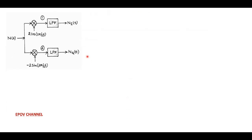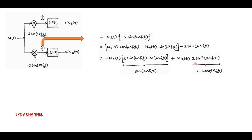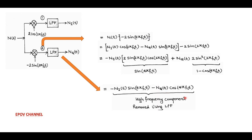Similarly, for the lower quadrature path, the input of the second low pass filter is n(t)·(−2sin(2πfct)). After substituting n(t) in terms of in-phase and quadrature components and rearranging, we get: −ni·sin(4πfct) − nq·cos(4πfct) + nq(t). At the output of the low pass filter, the high-frequency components are removed, and only the quadrature low pass random process nq(t) passes through.